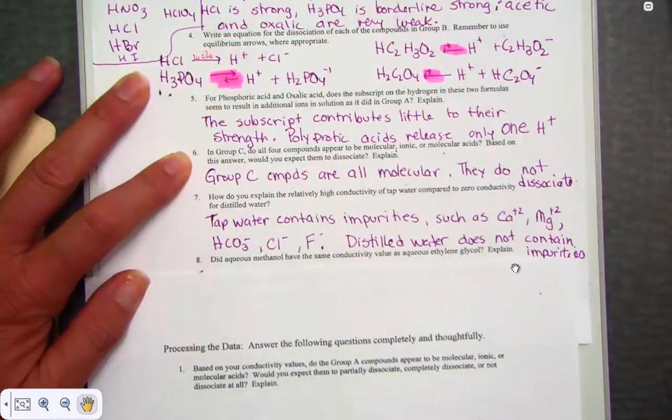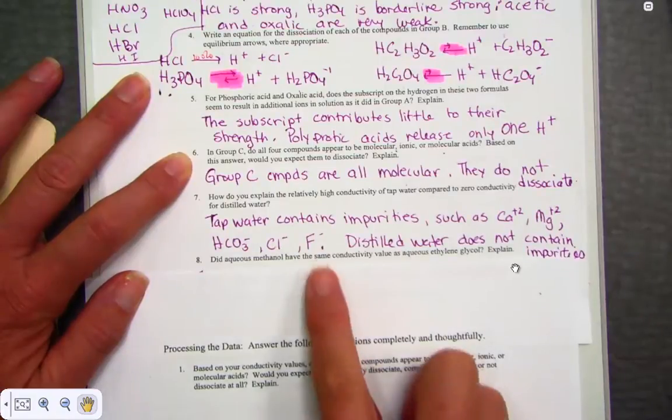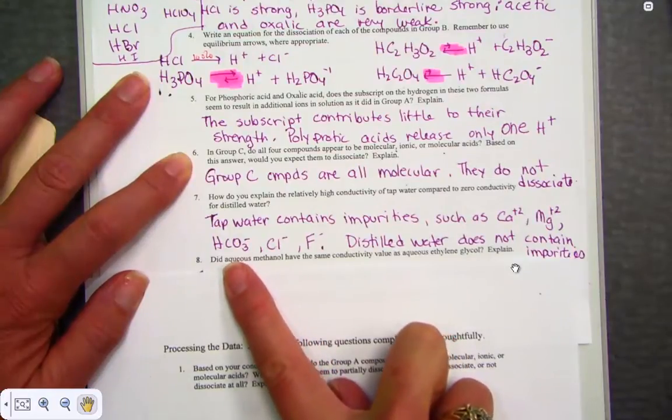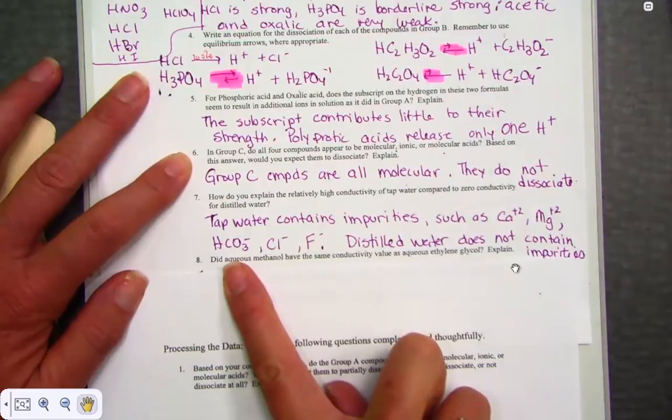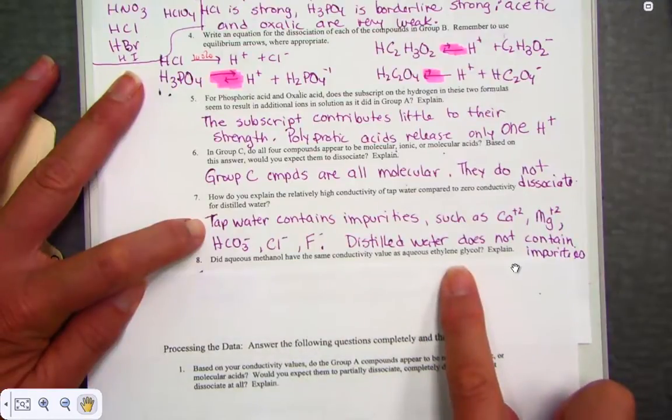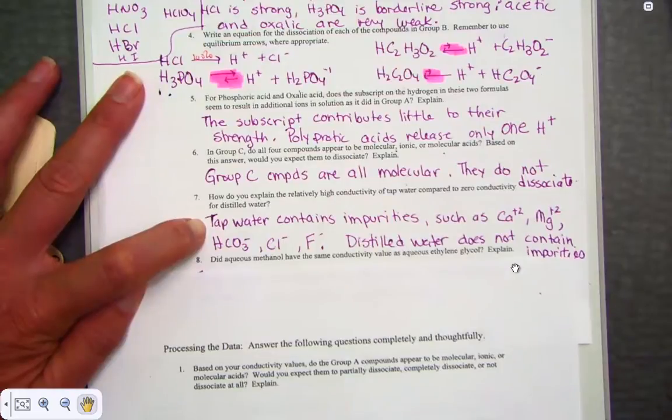How do you explain the relatively high conductivity of tap water to zero conductivity of distilled water? Again, the water that comes out of our sink contains dissolved ions, impurities, such as hard metals as calcium ions, magnesium ions. We add fluoride and chloride. Even the bicarbonate ion is used to help purify water as it travels through our pipes. All kinds of dissolved ions that are found in tap water. Distilled water, by the very definition, does not contain any impurities. 100% H2O with no dissolved ions. Therefore, it should have zero conductivity.